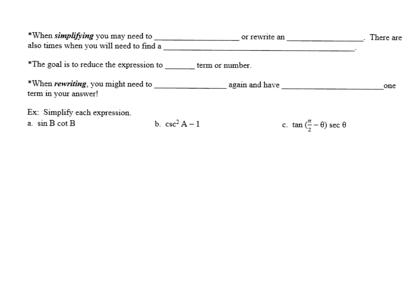When simplifying, you may need to factor or rewrite an identity. We'll factor with trig terms and then we'll use our identities and maybe transfer things from one side of the equation to the other.